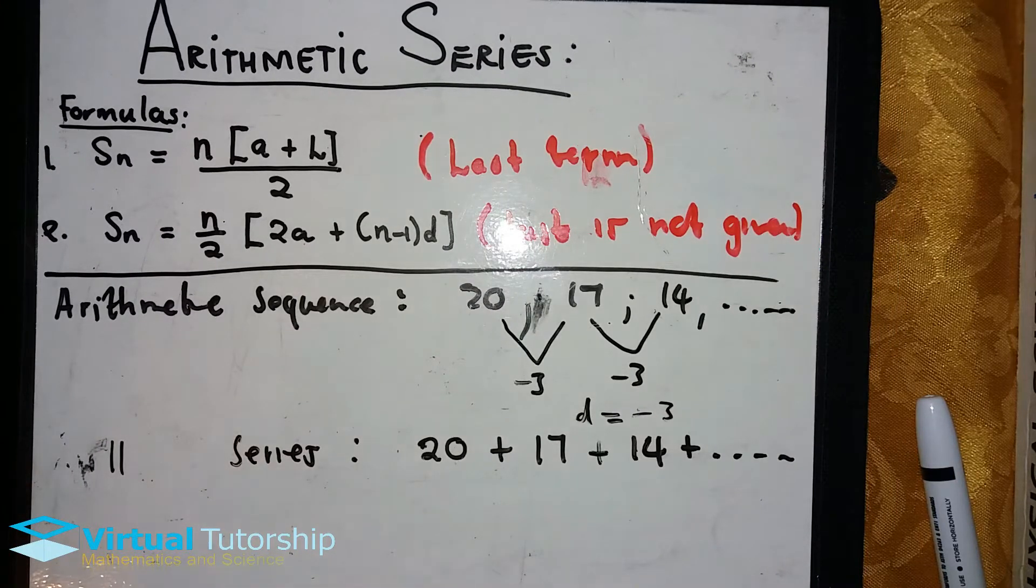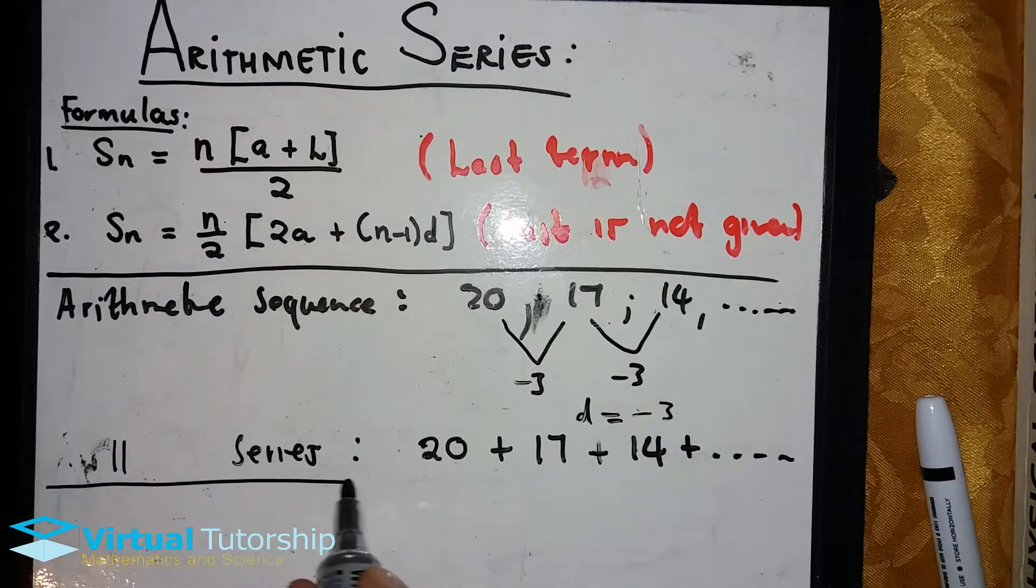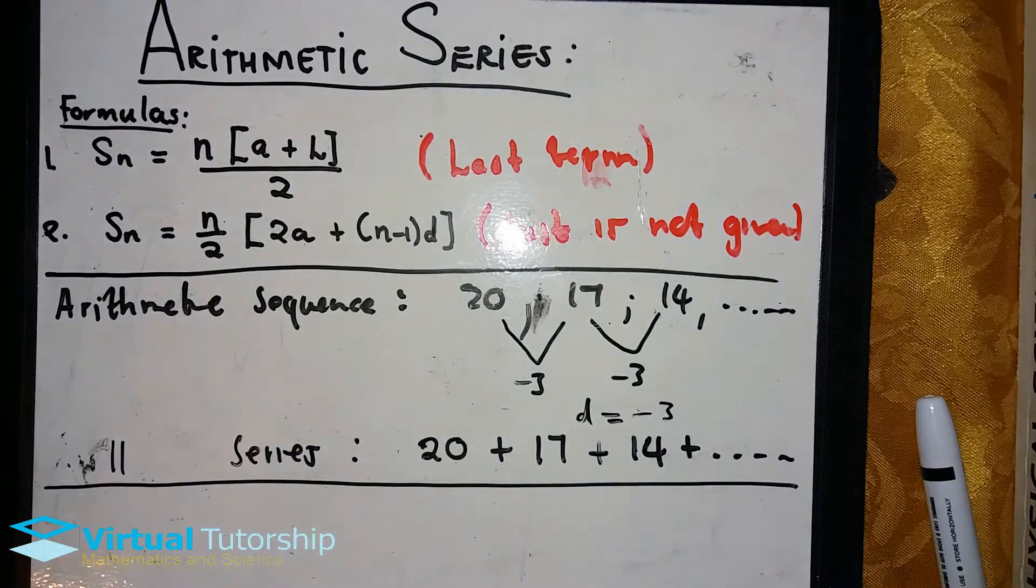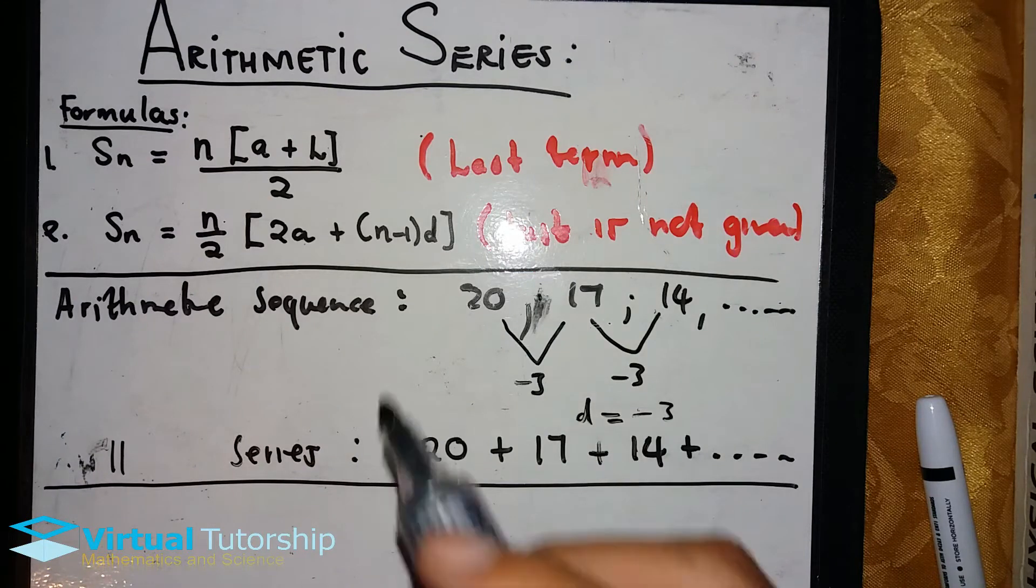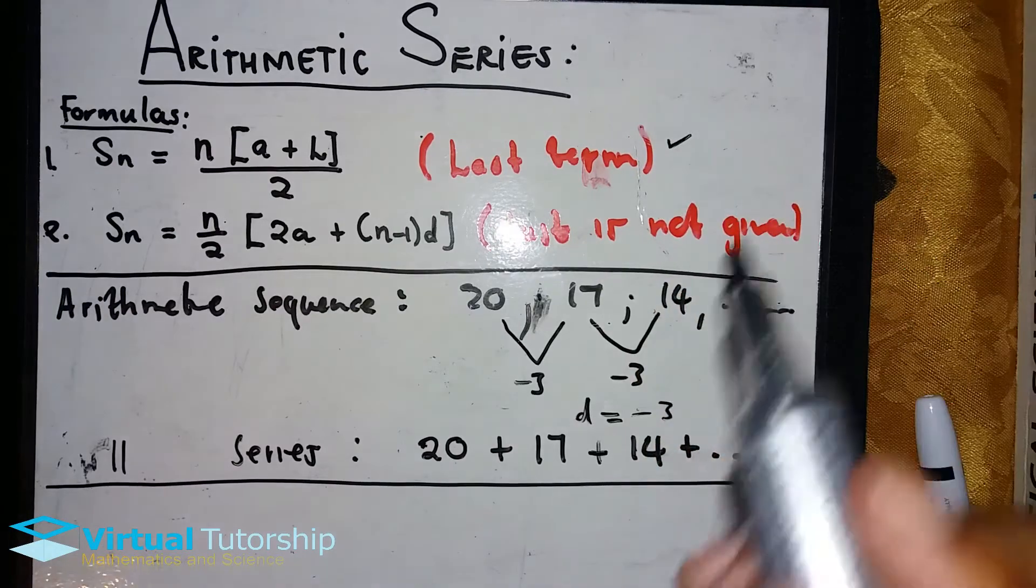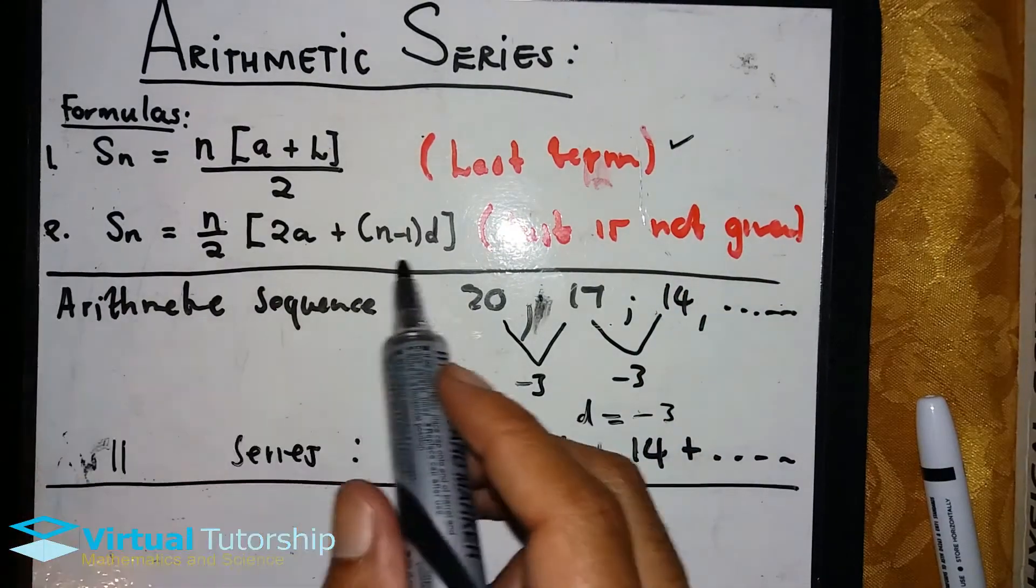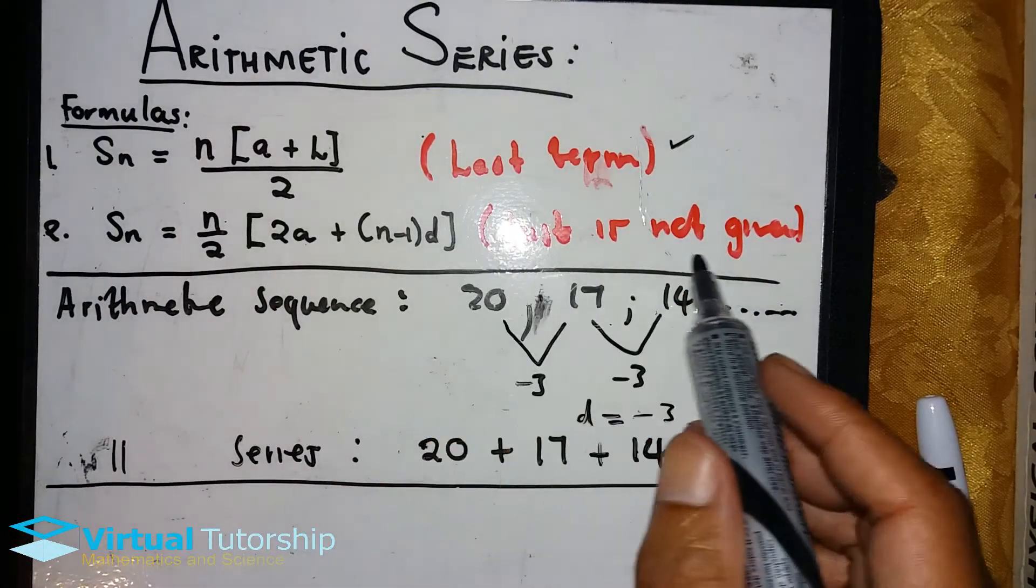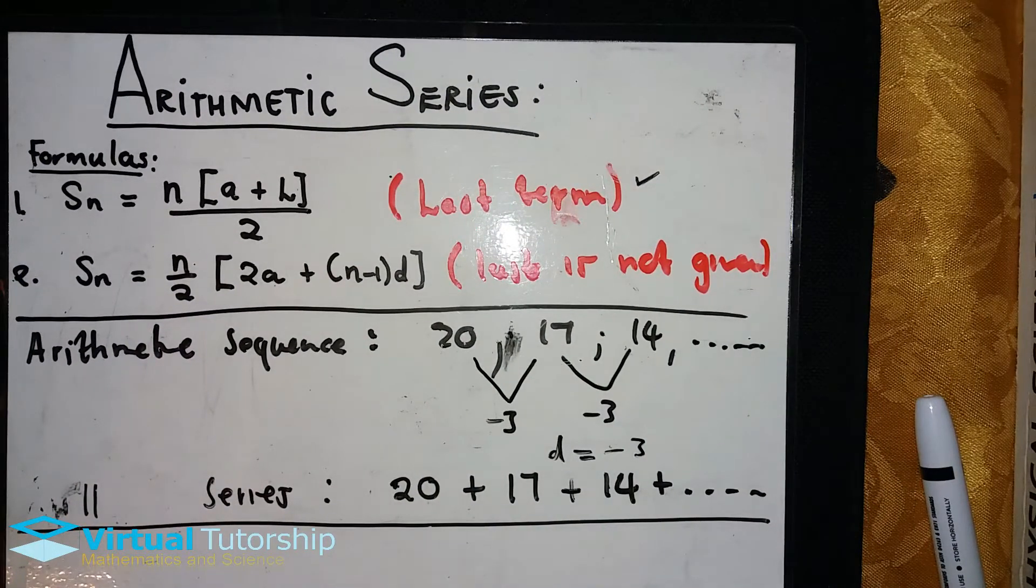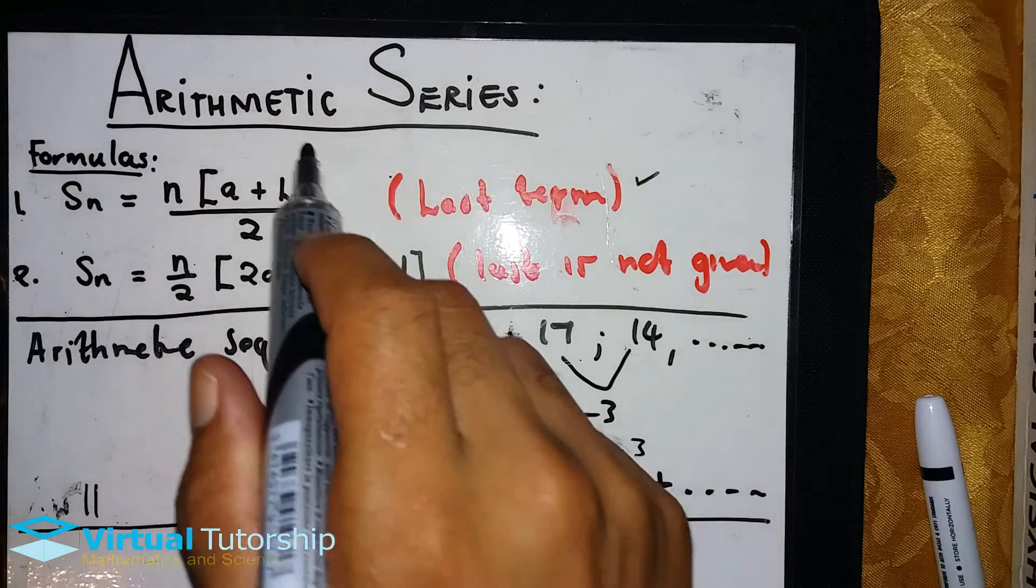We have two formulas for an arithmetic series. The first one we use when the last term is given. The second one we use when the last term is not given.